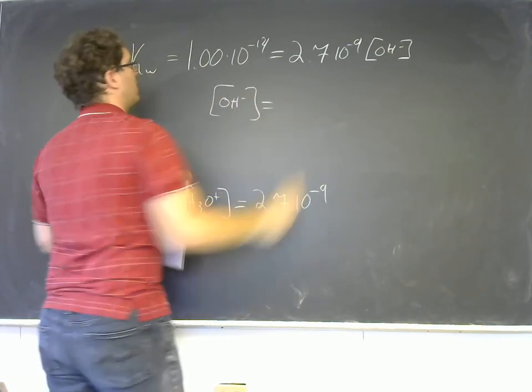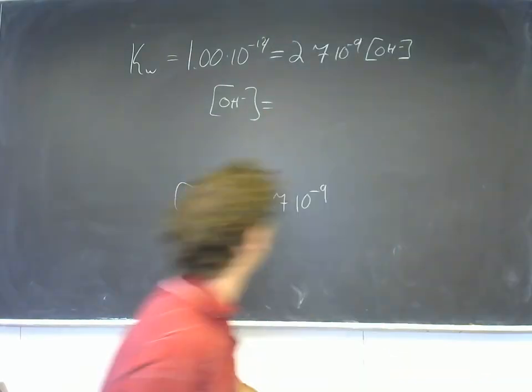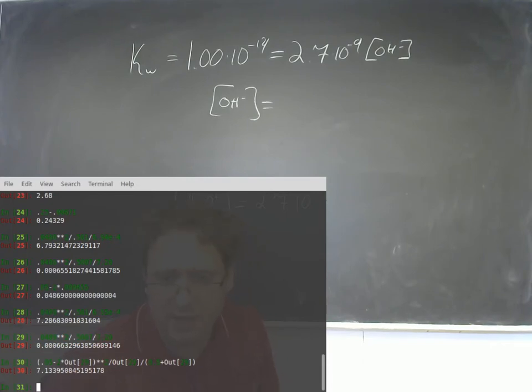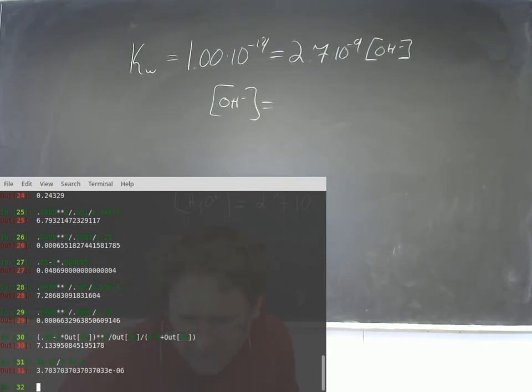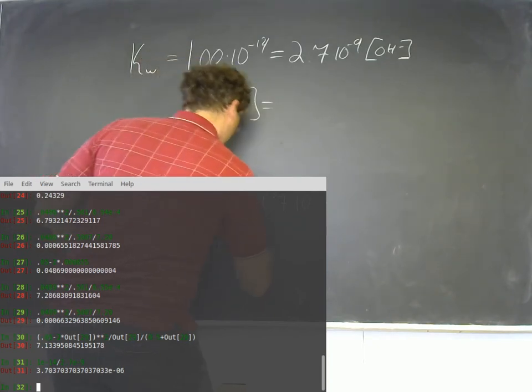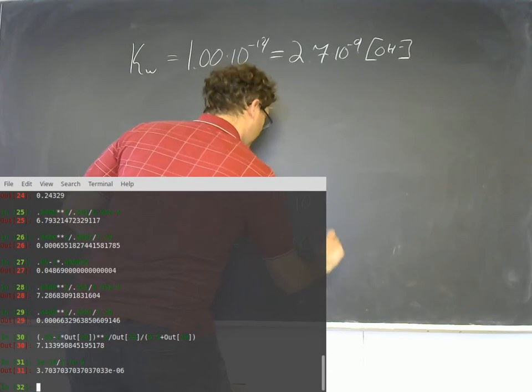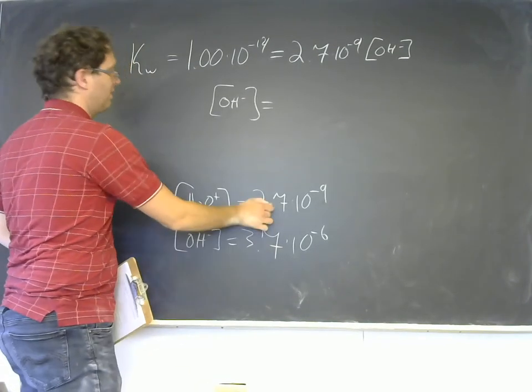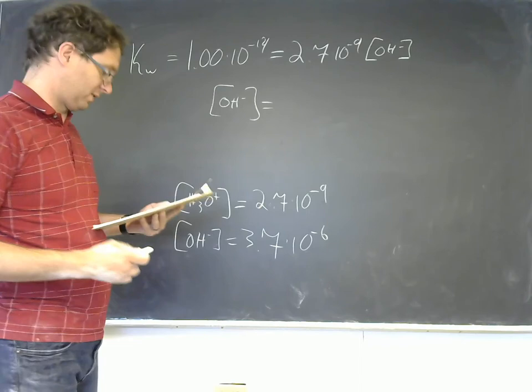OH minus is going to equal 1 times 10 to the negative 14th divided by 2.7 times 10 to the negative 9th. So let's figure out what that will be. 1e negative 14th divided by 2.7e negative 9th. And I get 3.7 times 10 to the negative 6th. And we see that that concentration is indeed greater than that, and we're justified in calling it a basic solution in the first place.